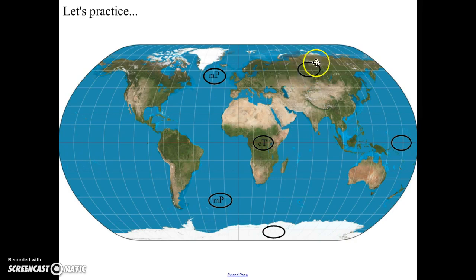How about this one up in Asia, up near Russia? Well, it's over land, so it's going to be dry. So continental. And again, it's going to be a cold area. It's nowhere near the equator. So continental polar, lowercase c, capital P.